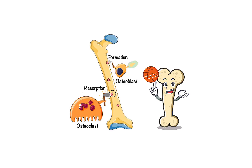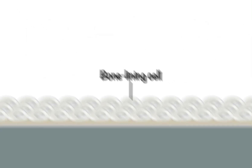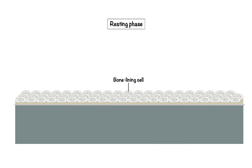Bone remodeling consists of several stages, starting with the resting phase. In this phase, the bone remains in a stable state with no active remodeling taking place. This phase is marked by the presence of bone lining cells, which cover the bone surface and help maintain its integrity. At this stage, osteoblast and osteoclast precursor cells are inactive, awaiting signals to initiate the remodeling process.